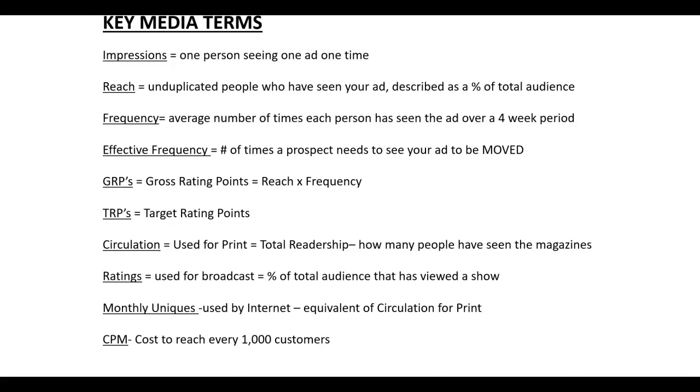GRPs—basically what you do is you take your reach, your reach is a percentage, and you just remove the percentage figure and take the reach as a whole number, not as a fraction, and multiply it by your average frequency. And that gives you your total gross rating points. TRPs are the same as gross rating points, but it's expressed against your target.